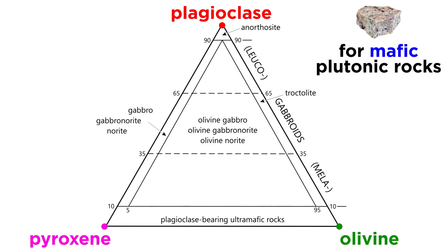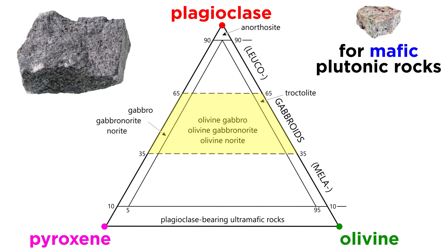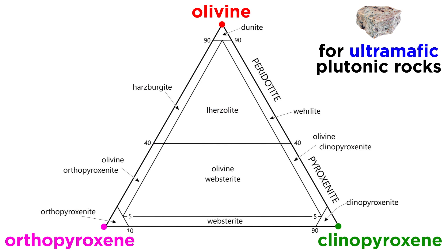On the other hand, mafic plutonic rocks are named based on their relative abundances of olivine, pyroxene, and plagioclase, and again are plotted on ternary diagrams. Gabbro, which is the plutonic version of basalt, contains roughly equal parts plagioclase and clinopyroxene. Likewise, ultramafic rocks can be classified using the minerals olivine, clinopyroxene, and orthopyroxene.